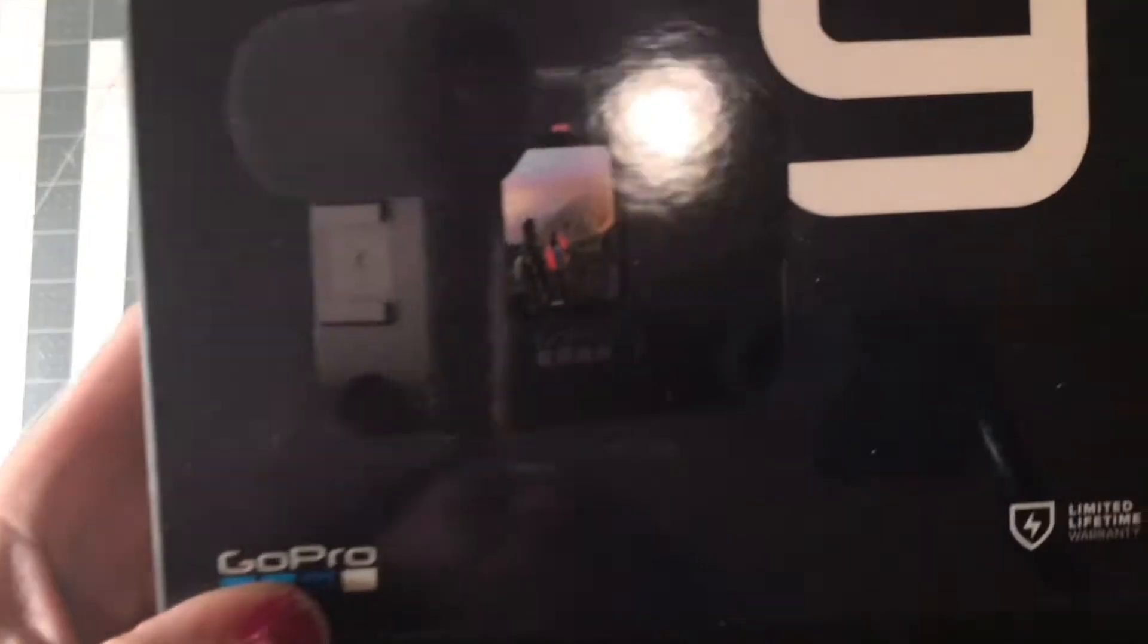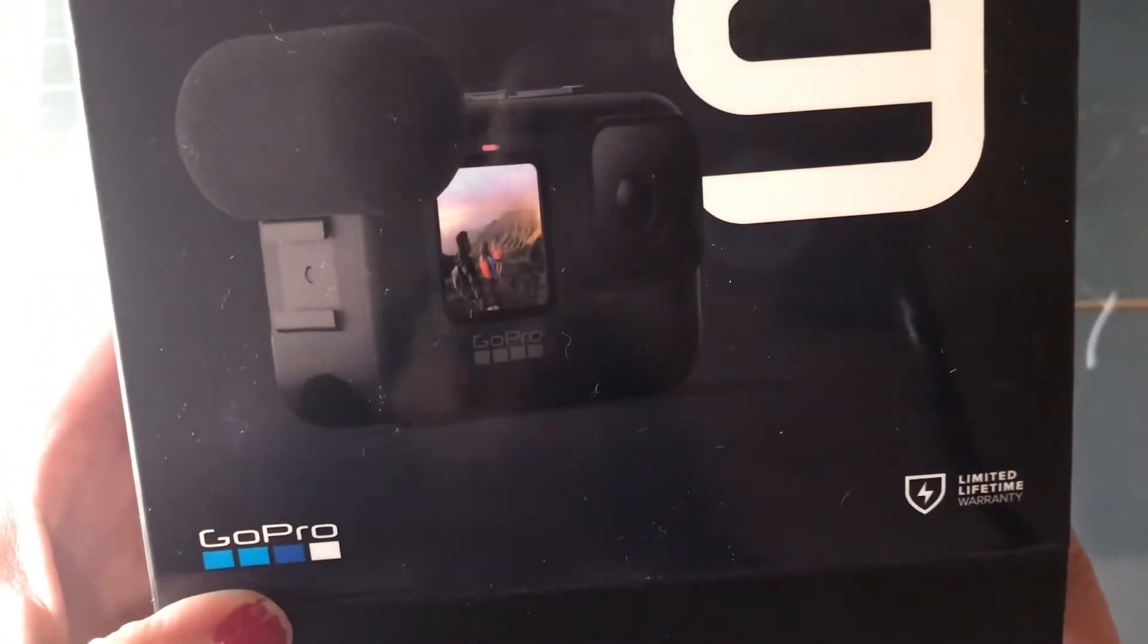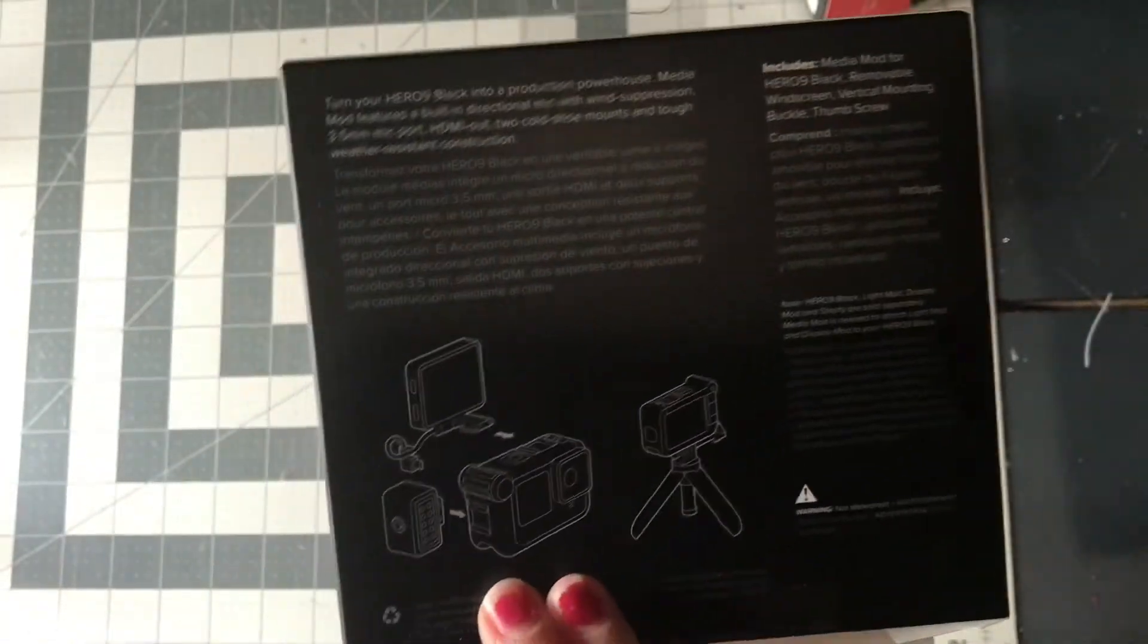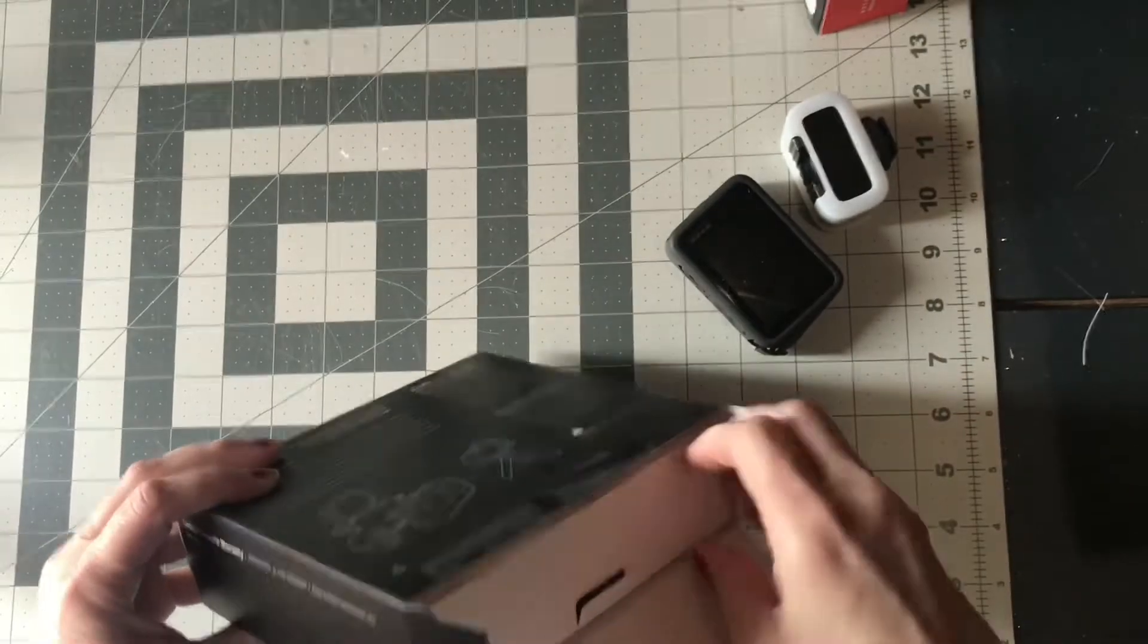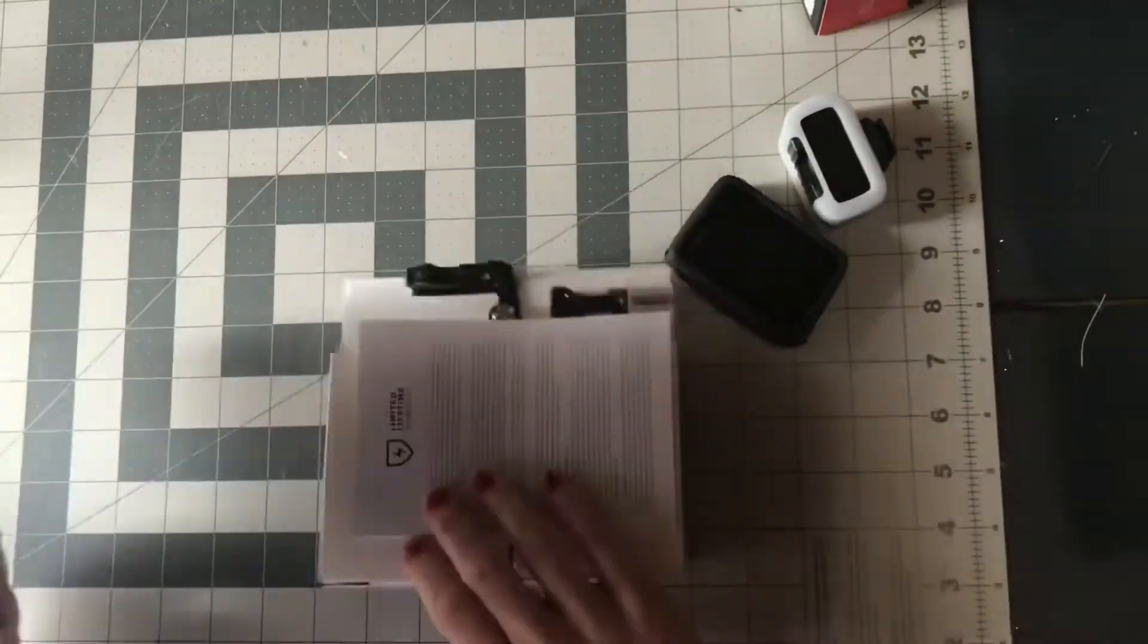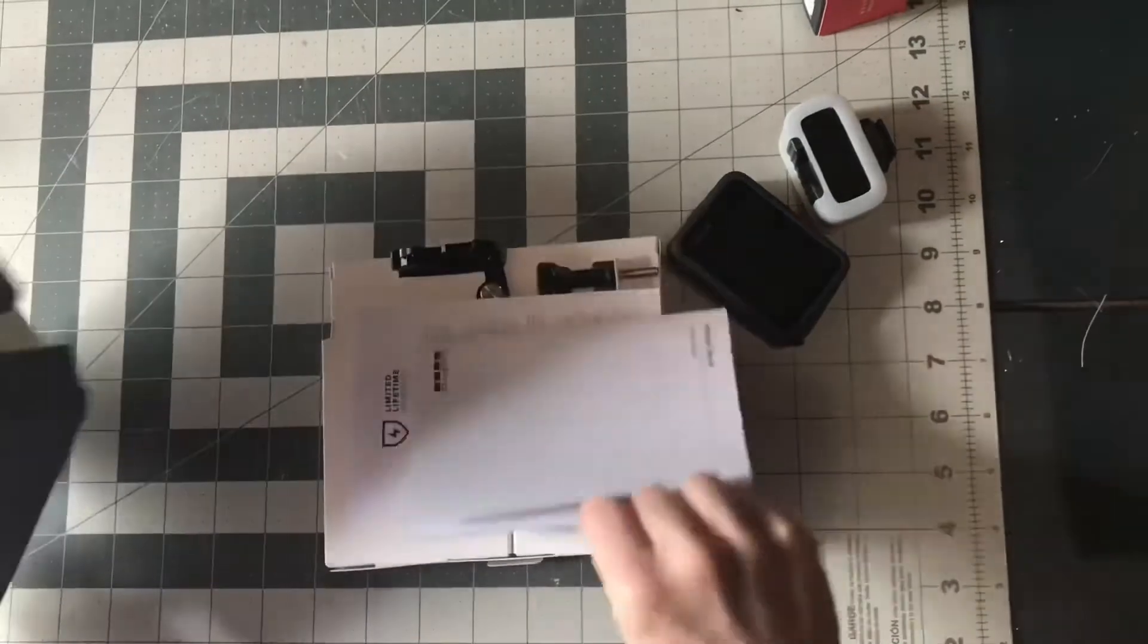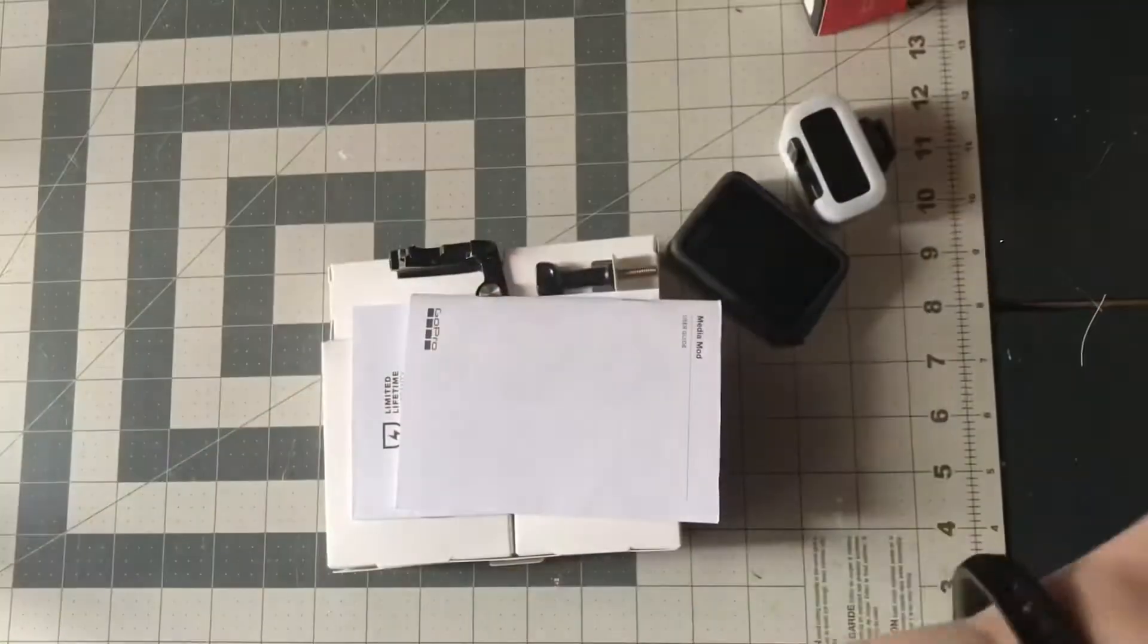Here's the box that it came in. I've cut the tape at the bottom, but I have not taken it out or done anything with it. There's a user guide and a limited warranty booklet in there, and then you've got all the pieces.